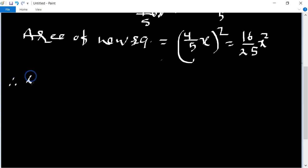Difference in area. Difference in area equal to original area is x square and new area is 16 upon 25 x square.